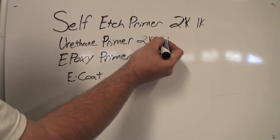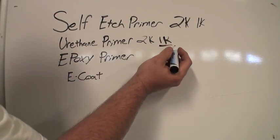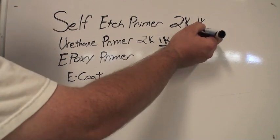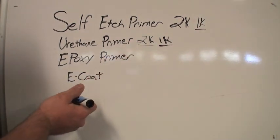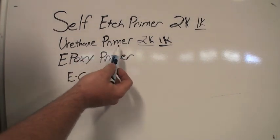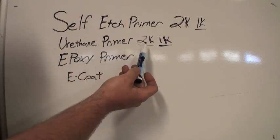So 1K being a rattle can or sometimes they do sell a can that doesn't have a hardener. 2K, always want to do 2K and you always want to spray it out of a spray gun. Rattle cans are garbage.